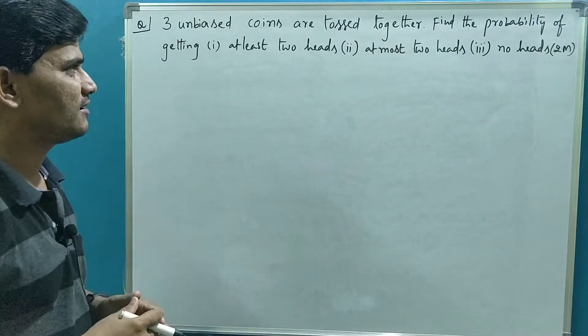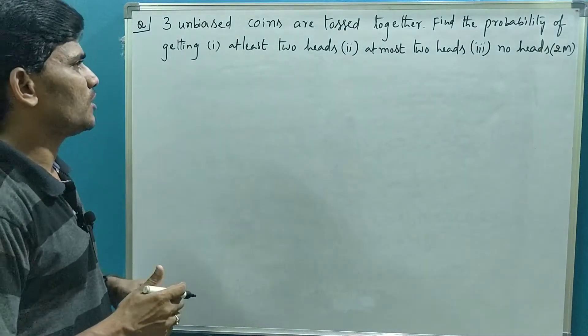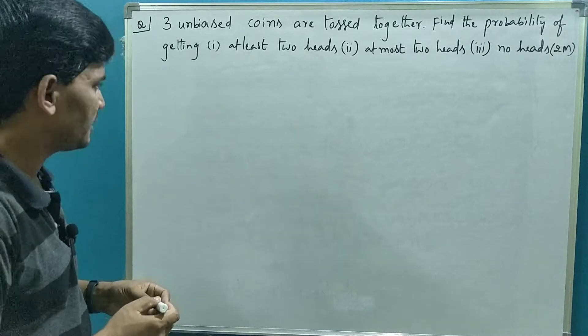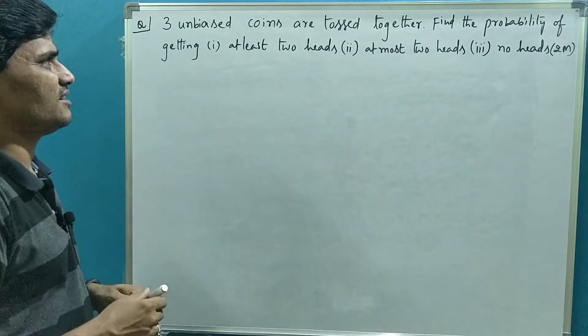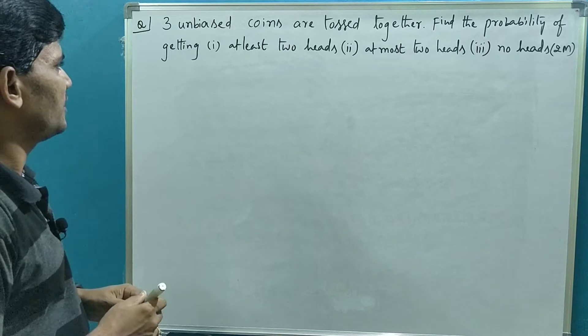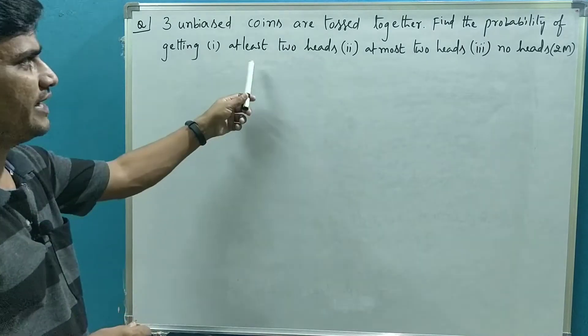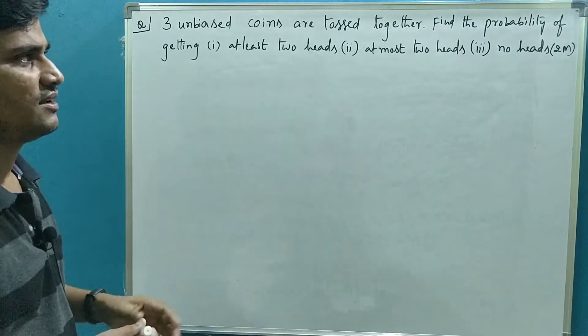Welcome to Anjima channel. Let us discuss one more problem from probability. Three unbiased coins are tossed together. Find the probability of getting at least two heads, at most two heads, and no heads.